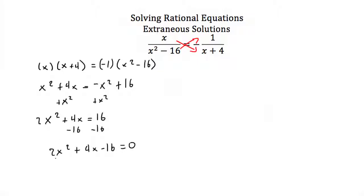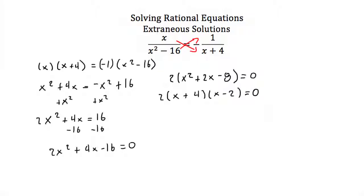Factoring: pull out a greatest common factor of 2, giving 2 times x squared plus 2x minus 8. This factors into x plus 4 times x minus 2. Using the zero product property, if x plus 4 equals 0, then x equals negative 4. If x minus 2 equals 0, then x equals 2. So our candidate solutions are x equals negative 4 and x equals 2.